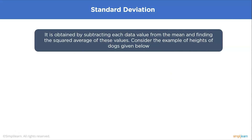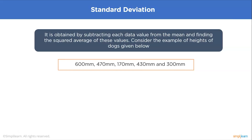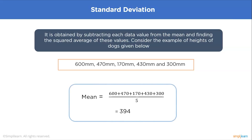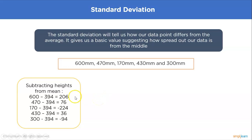To find the standard deviation, subtract each data value from the mean and find the squared average of those differences. Using an example of dog heights, we find the mean by adding all values and dividing by the total number — giving us a mean of 394 mm. To find standard deviation, we first subtract each height from the mean to see how far each data point is from the mean.